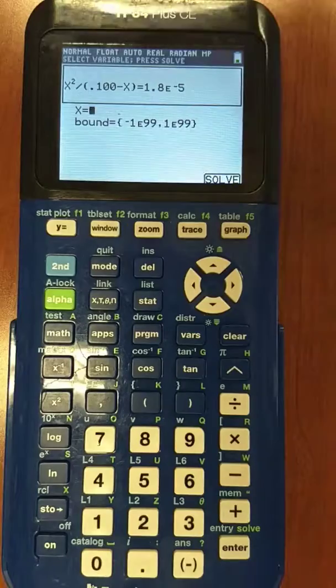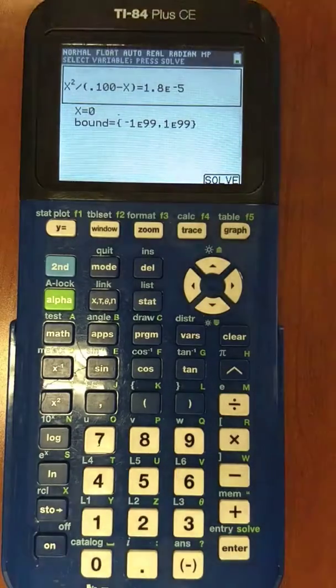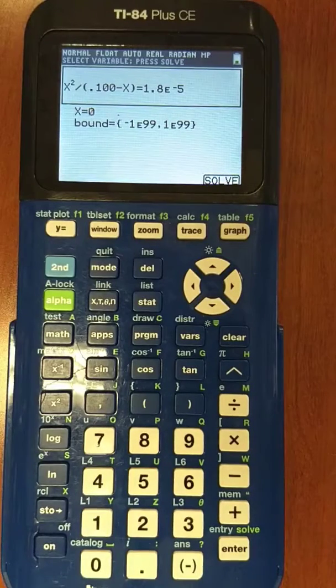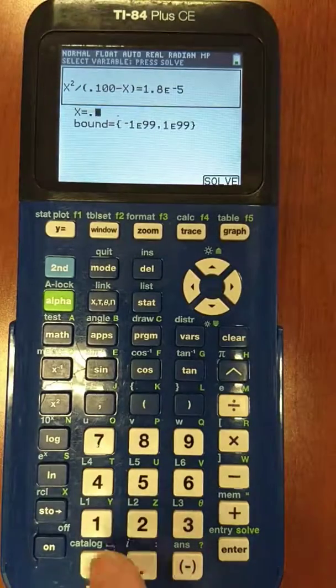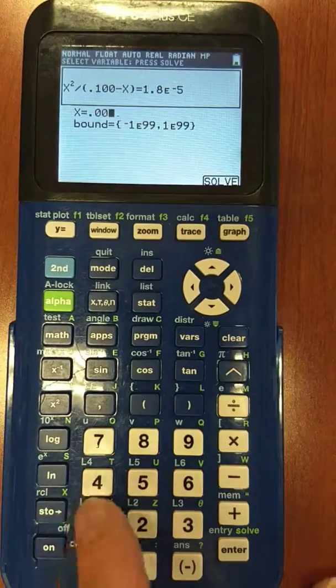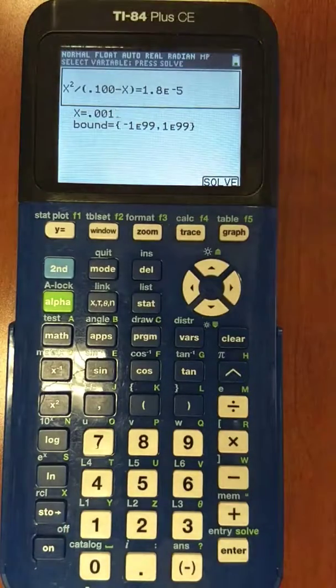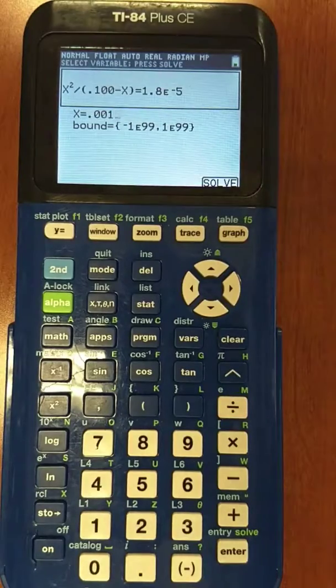Now what we need to do is give it an initial guess. We're trying to get this thing to calculate X, but we have to give it an initial X because that's how it works. So I'm just going to make up a number, and I'm going to do 0.001. Any number that's kind of close to the reasonable answer will be fine.